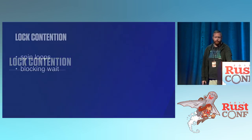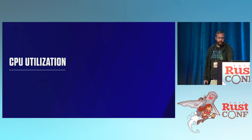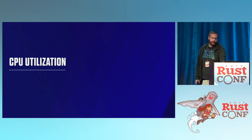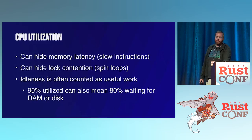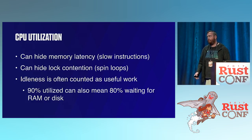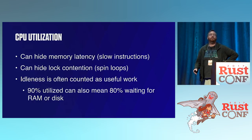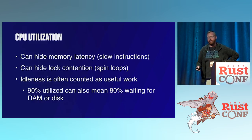Then we have lock contention — things like spin loops and blocking waits — these can cause performance problems, and we'll see one of those in a moment. CPU utilization is last because it generally hides a lot of performance issues. Usually CPU utilization can hide memory latency — a slow instruction looks the same whether you're stalling on memory or doing useful work.